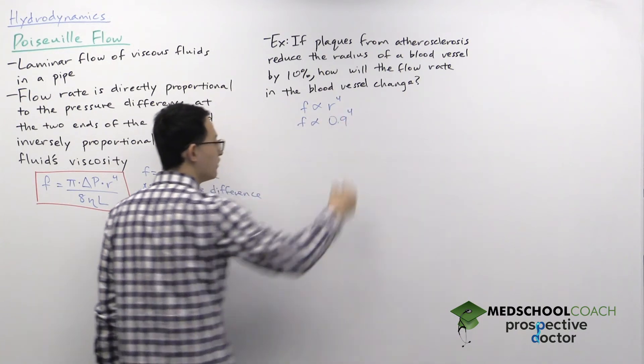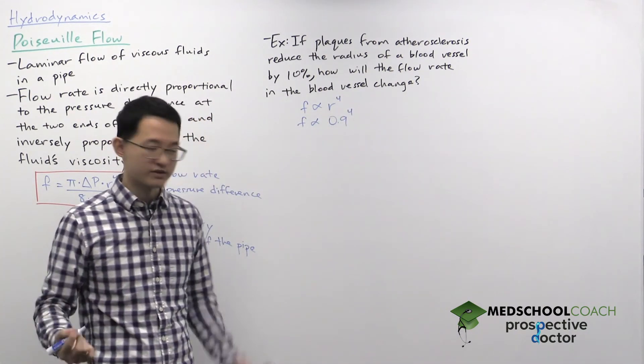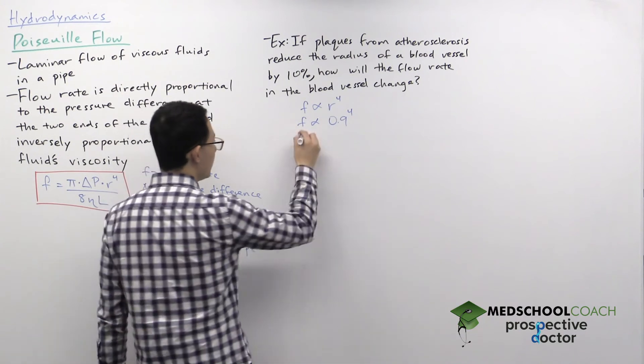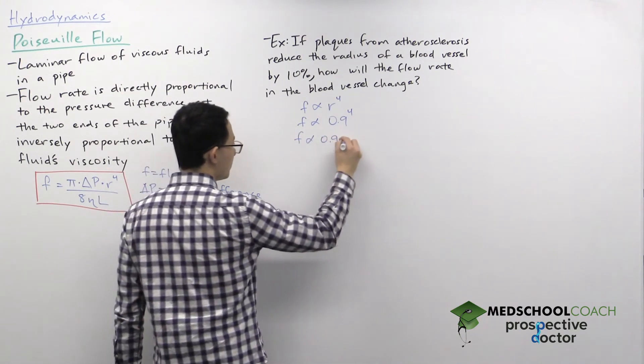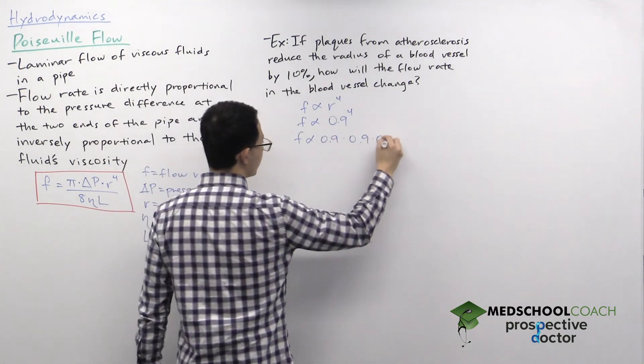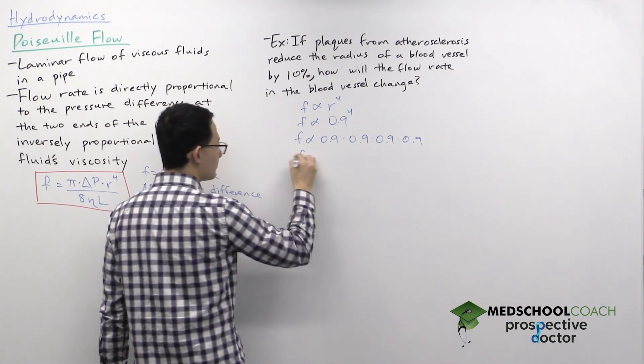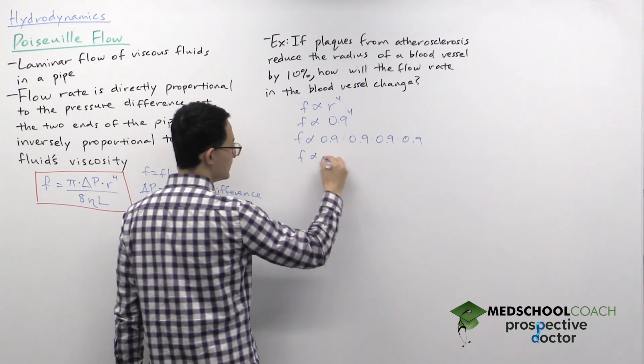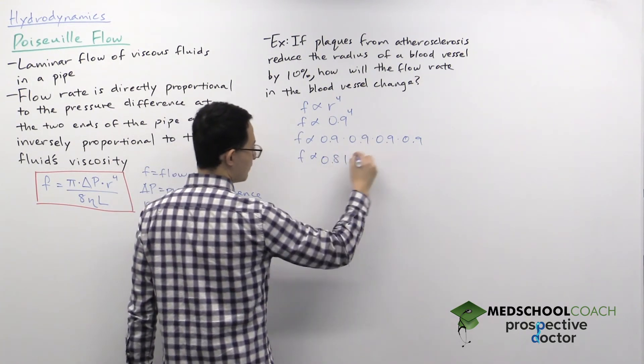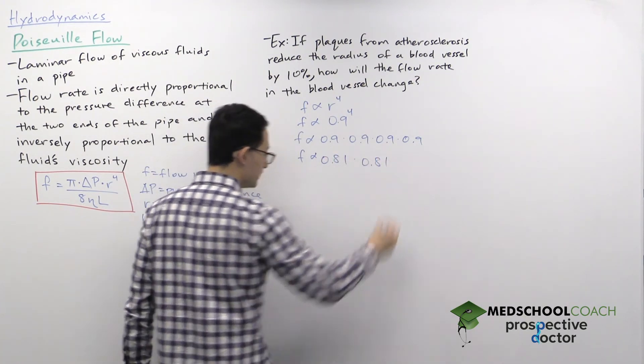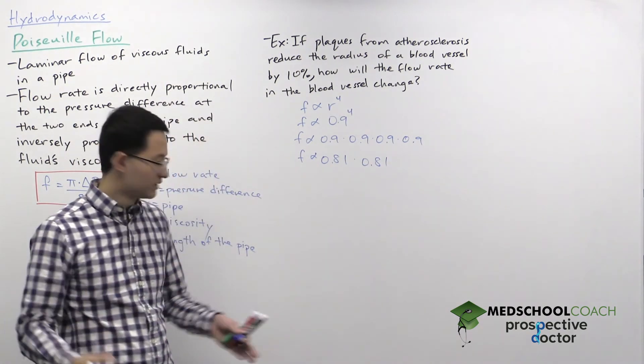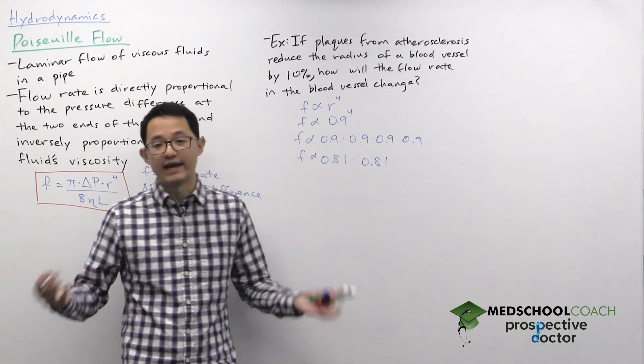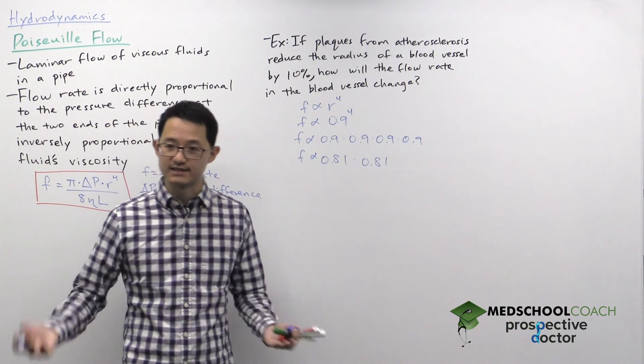So 0.9 to the power of four. This might seem a little tricky, but that's just 0.9 times 0.9 times 0.9 times 0.9. And 0.9 times 0.9, we know that's 0.81. So then it's just 0.81 times 0.81, which the math looks ugly, but 0.81 is close to eight and we know eight times eight is 64.